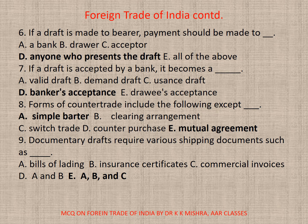Question 8: Forms of counter trade include the following except. The correct option is A — simple barter. Question 9: Documentary drafts require various shipping documents such as dash. Options: A. Bills of Lading, B. Insurance certificates, C. Commercial invoices, D. A and B, E. A, B, and C. The correct option is E — A, B, and C.